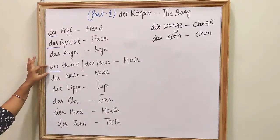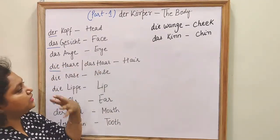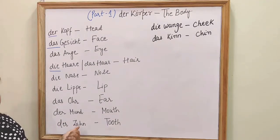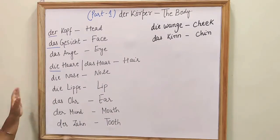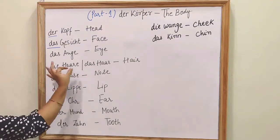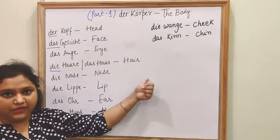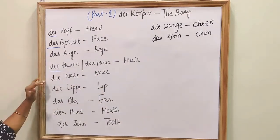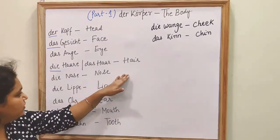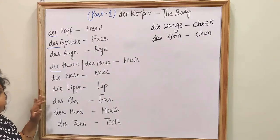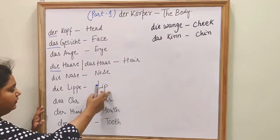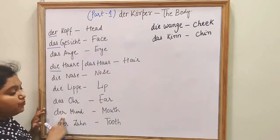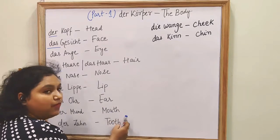Obviously we can't say 'hairs' in English, right? So in German we write it like this: 'die Haare' for plural, 'das Haar' for singular. 'Die Nase' — nose. 'Die Lippe' — lip. 'Das Ohr' — ear. 'Der Mund' — is mouth.